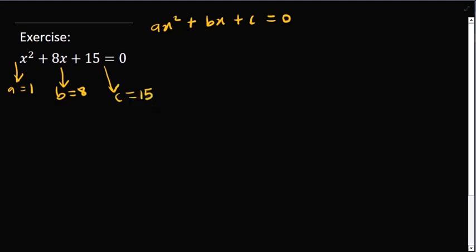Let's go ahead and solve this question. The first rule says we should identify the b term, which is the middle term — this is the first, the second, and the third term, and the one in the middle is b. So our b term is equal to positive 8. Then we identify the product of a and c: a multiplied by c, where a is 1, and c is 15. Their product, 1 times 15, is 15.